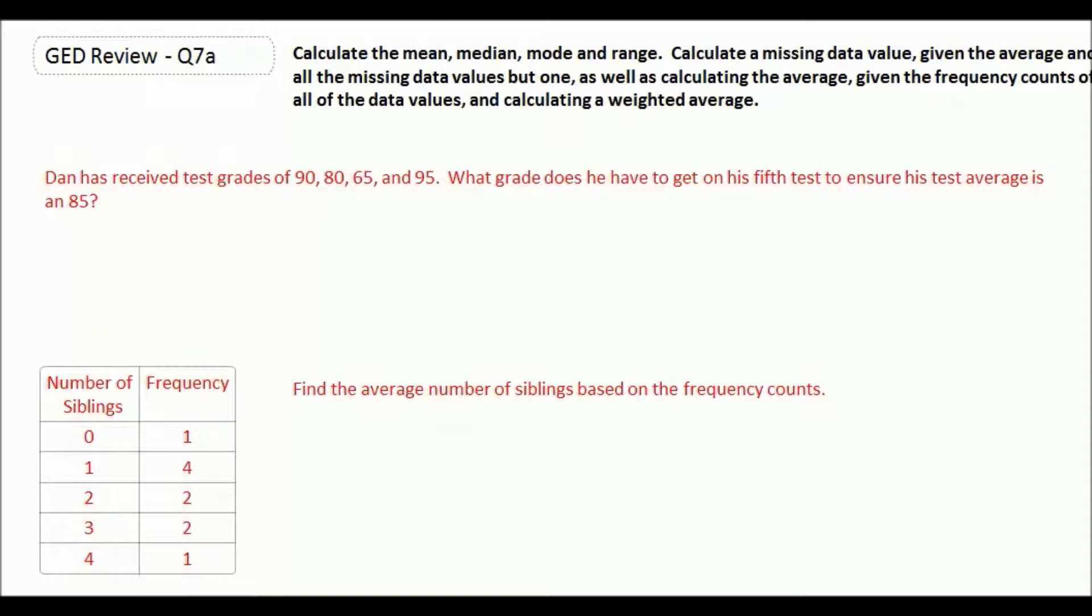So for example, it says Dan has received test grades of 90, 80, 65, and 95. What grade does he have to get on his fifth test to ensure his test average is an 85? So you need to figure out the goal amount of points that Dan needs to get.